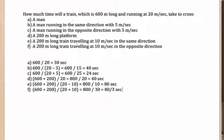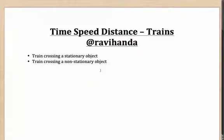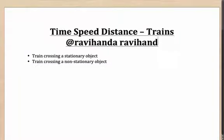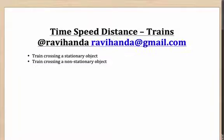As you can see, these are the various cases possible when you have a train and another object that is stationary, moving in the same direction, or moving in the opposite direction. These are broadly the cases you can get in time, speed, and distance questions based on trains. You can connect with me on Twitter at @ravihanda or by email at ravihanda@gmail.com. Thank you!